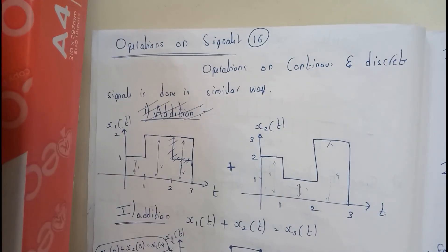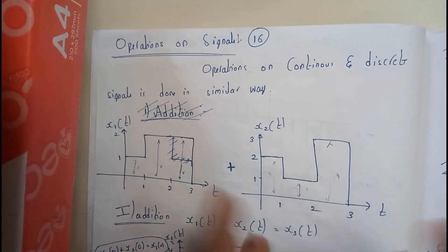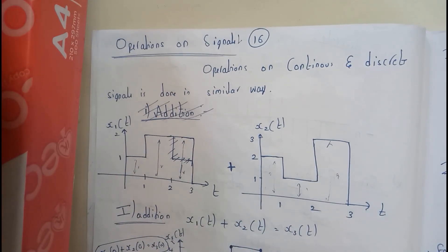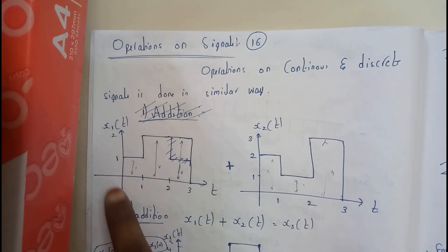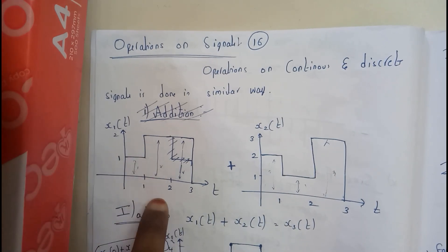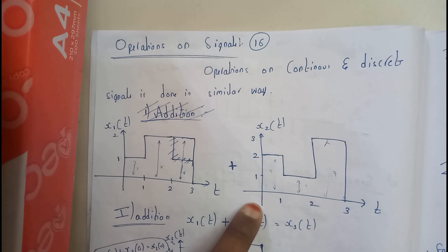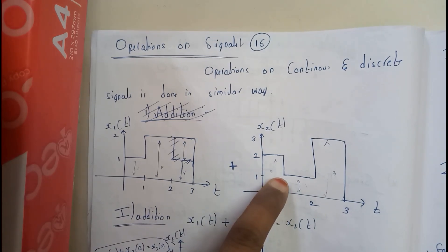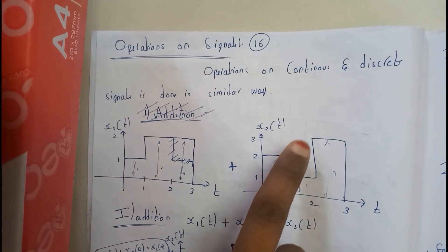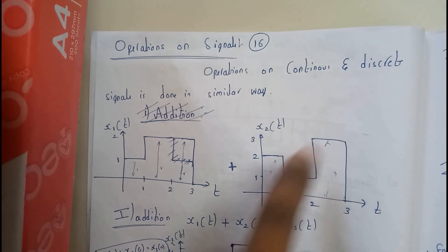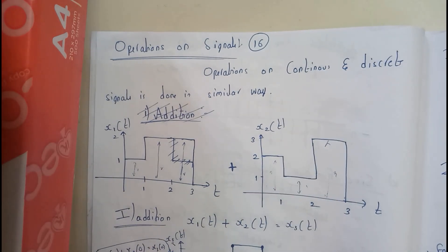Let us assume that this is our first signal x1(t): at zero it is one, at one it is two, at two it is two, at three also it is two. And x2(t): at zero it is two, at one it is one, at two it is three, and at three it is three. So these are the two signals.